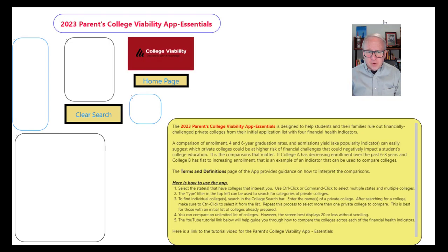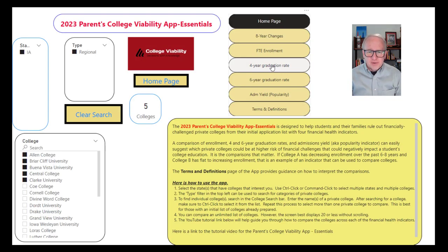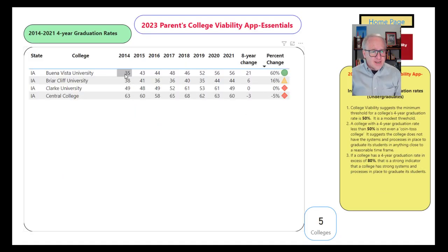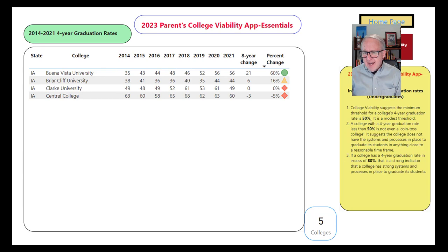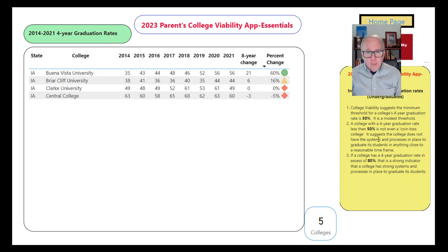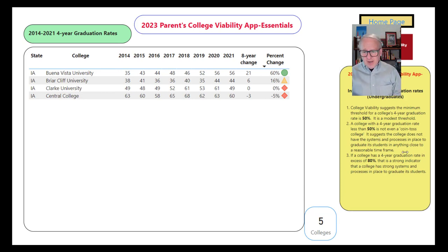Let's go back to the home page and look at four-year graduation rates for the same five colleges. Clark University's four-year graduation rates have essentially been flat over the eight years reported, with some movement in between. Buena Vista has had significant improvement in their four-year graduation rate. For four-year graduation rates, I use a threshold of 50% — if a college is not graduating more than 50% of its students in four years, I call that a coin-toss college, because it's no better than flipping a coin on whether your student will graduate.